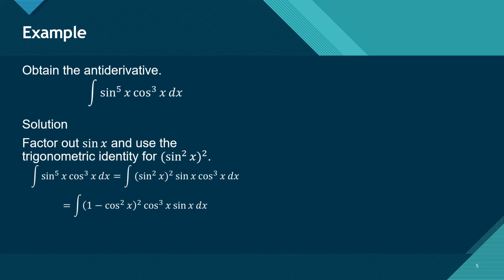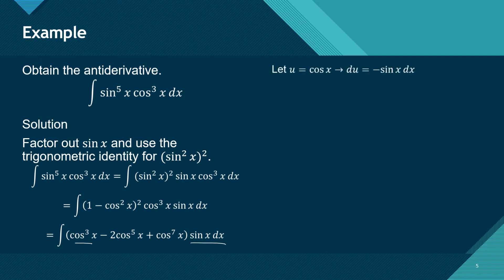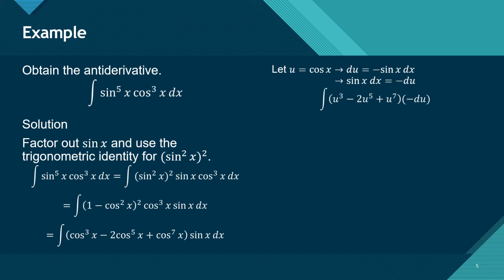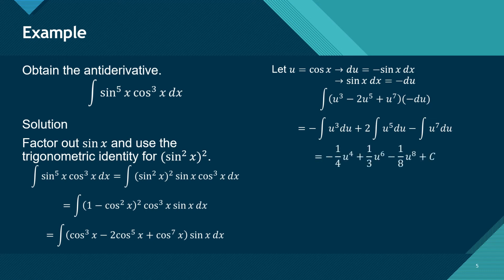We expand this binomial and do the multiplication — pay attention to the laws of exponents. This is the result. This can be solved using the technique of substitution. Let u equal cosine of x; du is negative sine of x, so sine of x dx equals negative du. Be careful — the derivative of cosine of x is negative sine of x, not just sine of x. Writing everything in terms of u gives a function that is polynomial in form. We integrate term by term, apply the power rule, and this is the result.